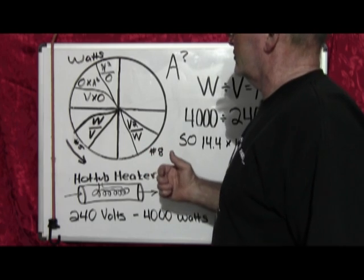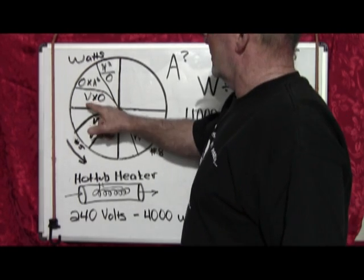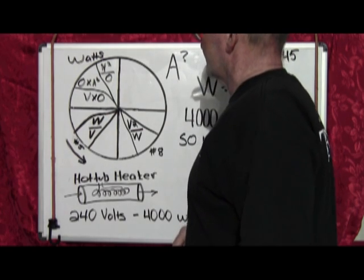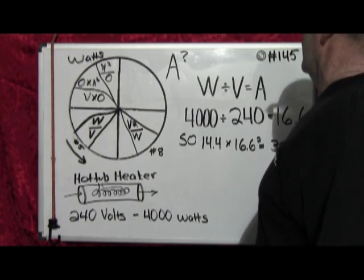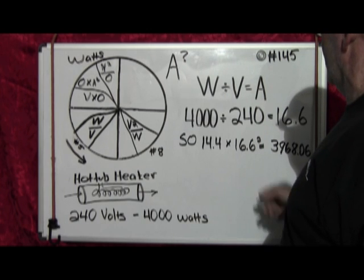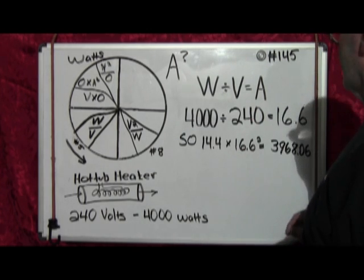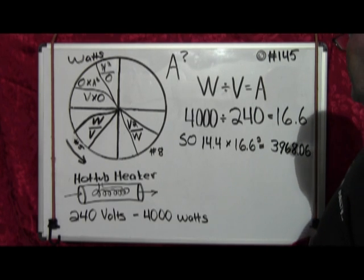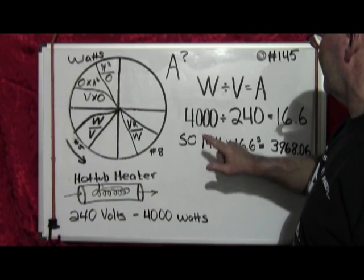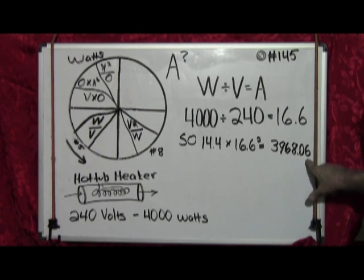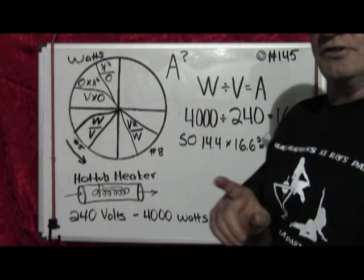So let's move on to the last one which is voltage times amps is equal to watts. Well that's really simple because we know the voltage is 240 and the amps is 16.6. But let's do the math anyways because you'll see it's not going to match this, and I'll explain why too.